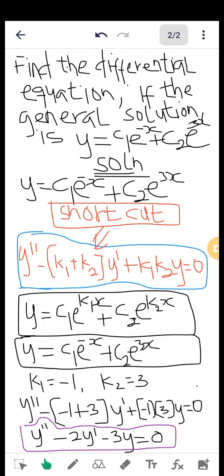So k1 is -1 times k2, and k2 is positive 3, times y. So y equals zero. Then we try to simplify this.